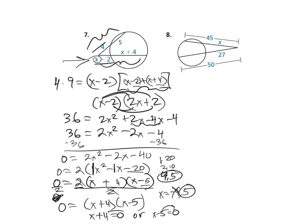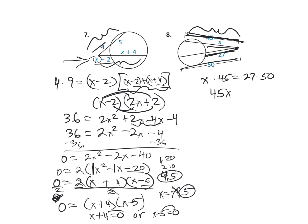Number 8: on the outside, the part X times the whole piece — and they tell you the whole piece is 45, so don't take X plus 45. The part of the other segment is 27 and the whole piece is given as 50. So 27 times 50 equals 1350. Divide by 45, and X equals 30.